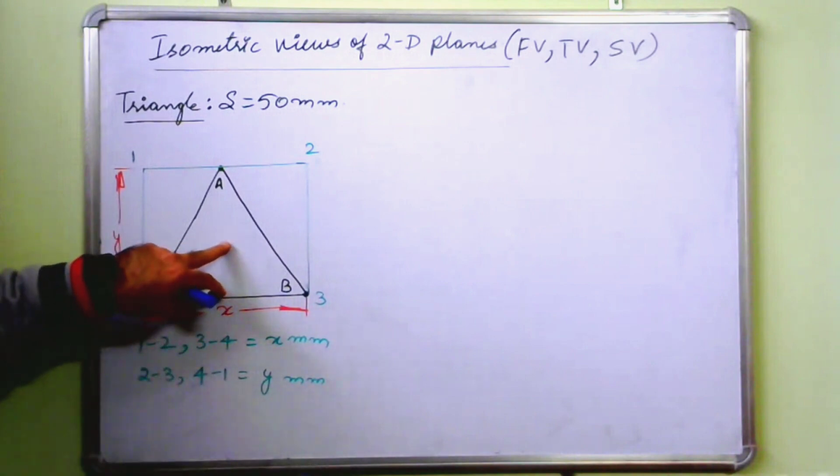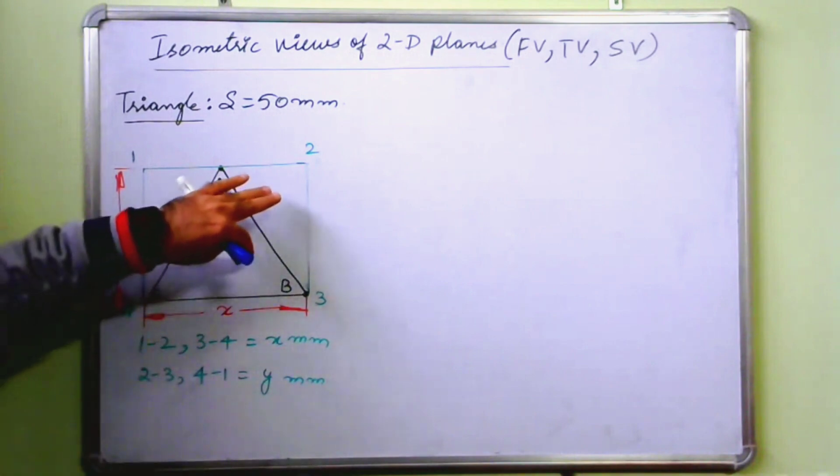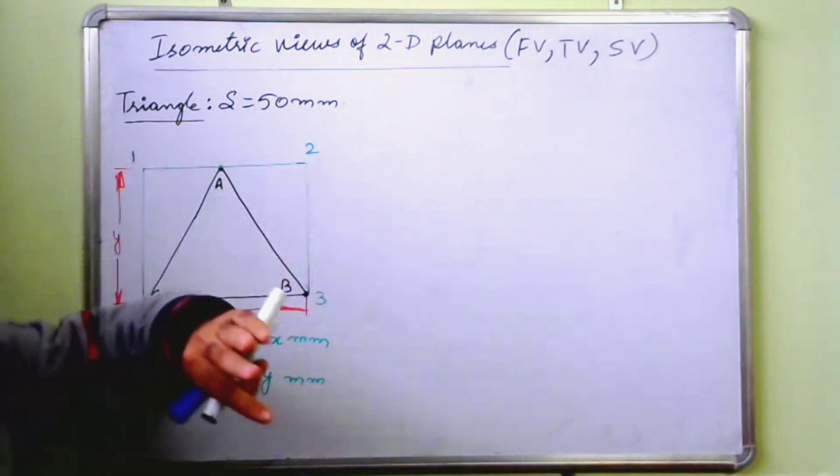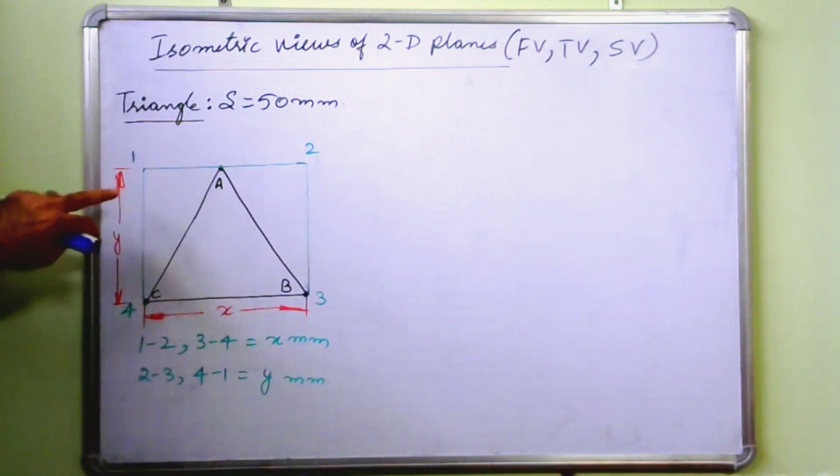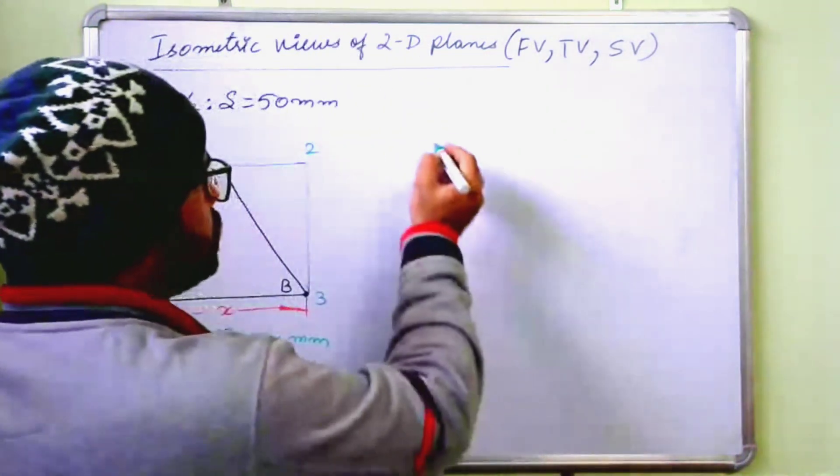Now after this, first of all, we will draw front view, isometric front view, top view and side views. For this triangle, first of all, we will have to create 1, 2, 3, 4. This parallelogram we will have to create. Just see how we will be creating it.